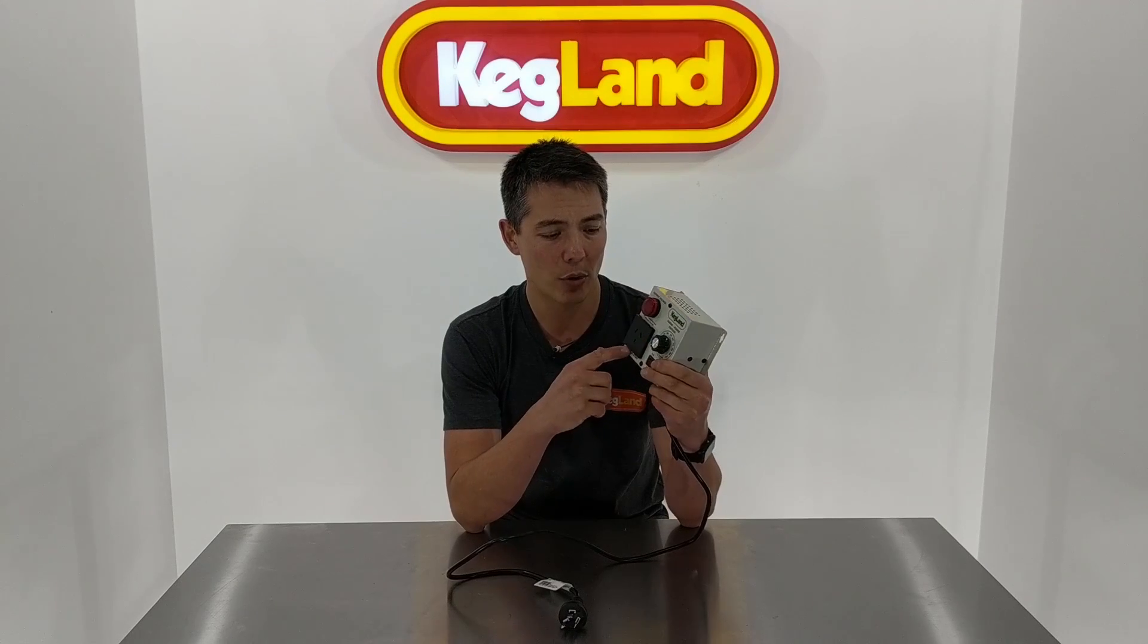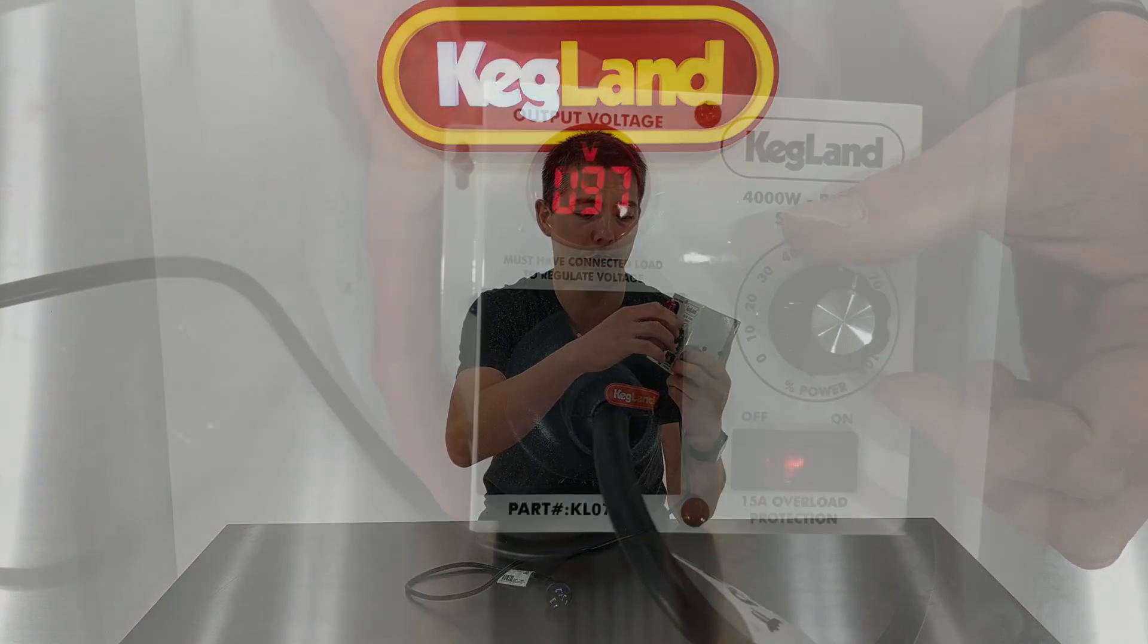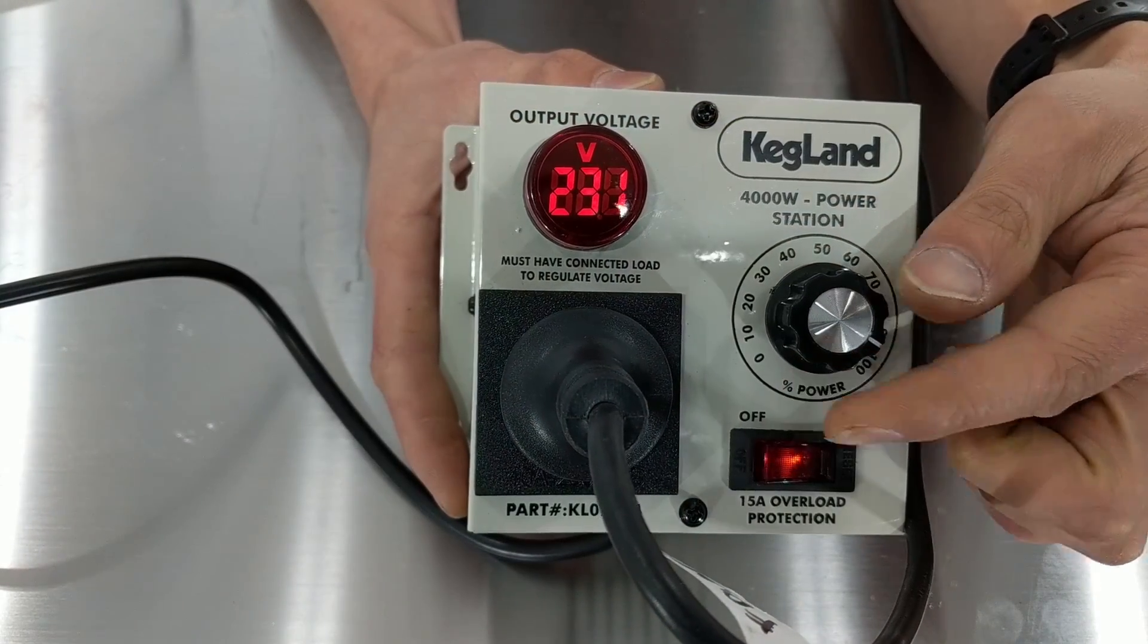So there's just a regular female socket here and on the other end you've got a male socket to plug into the wall. So it's really simple. You just plug this into the wall, plug the device you want to control power to on here, and then you just adjust it with this zero to 100% power that you're putting into it. So this clips the waveform.